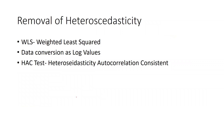Now how can we remove heteroscedasticity if it is present in our regression model? The methods include WLS — Weighted Least Squares. I will discuss this when I run all these tests in eViews. Another method is data conversion to log values, where we transform data so it is standardized, and then check whether heteroscedasticity has been removed. There is also the HAC test — Heteroscedasticity Autocorrelation Consistent. These are the methods to check and remove heteroscedasticity.